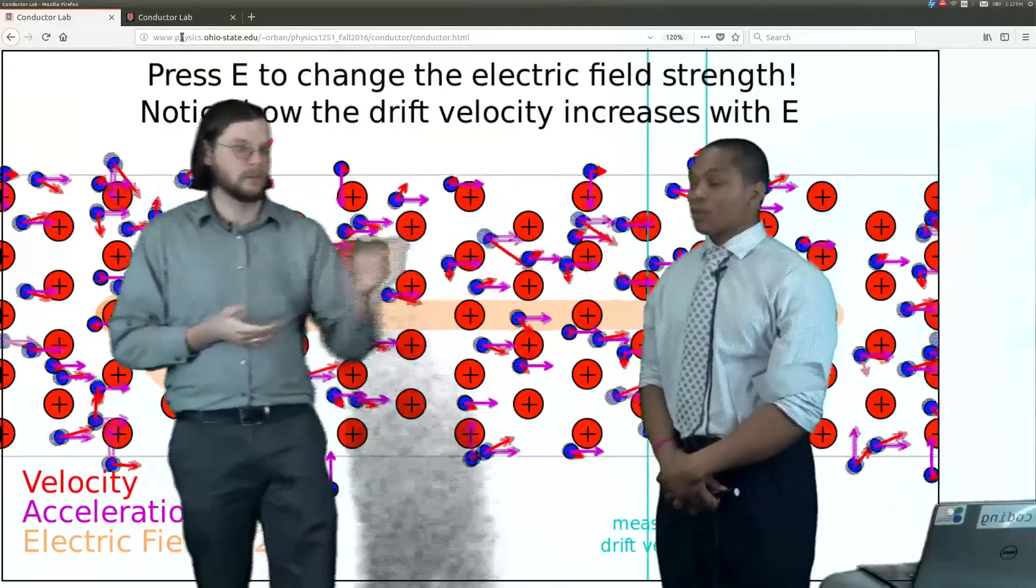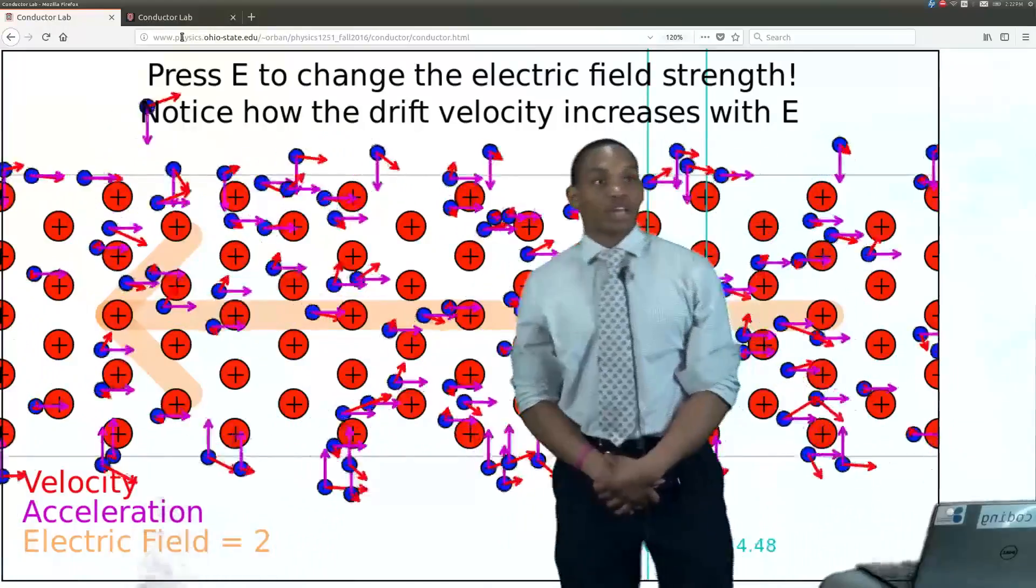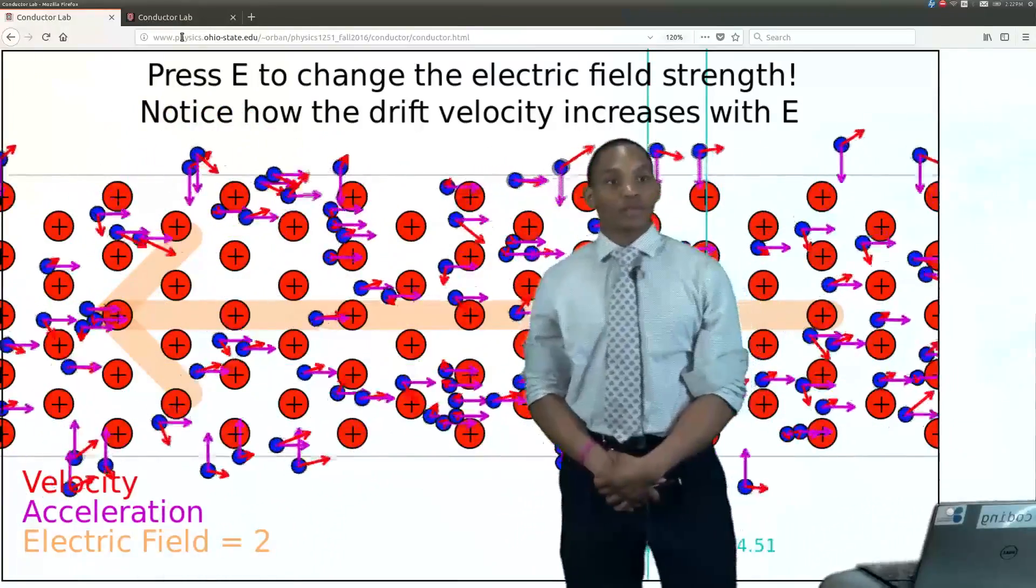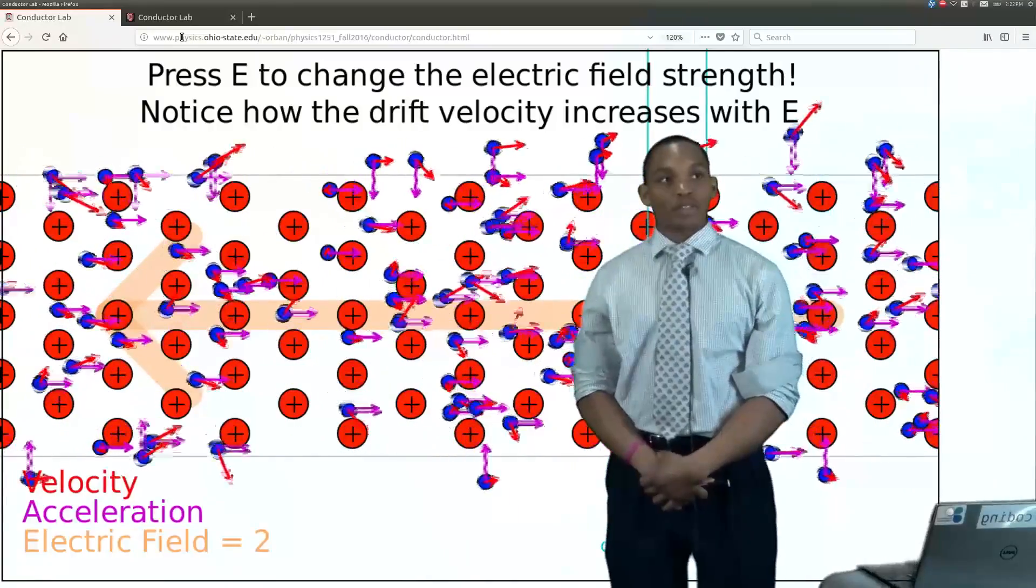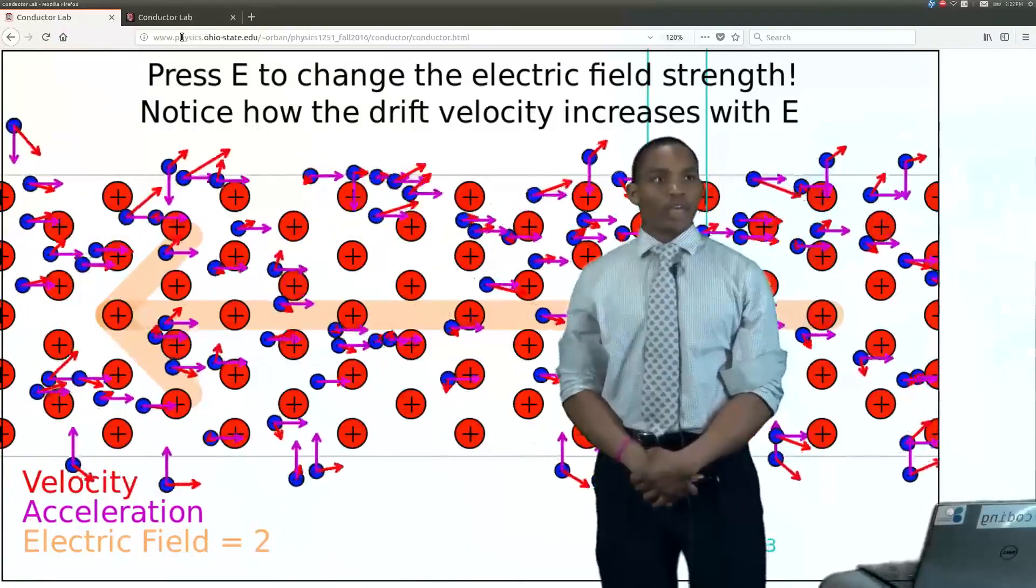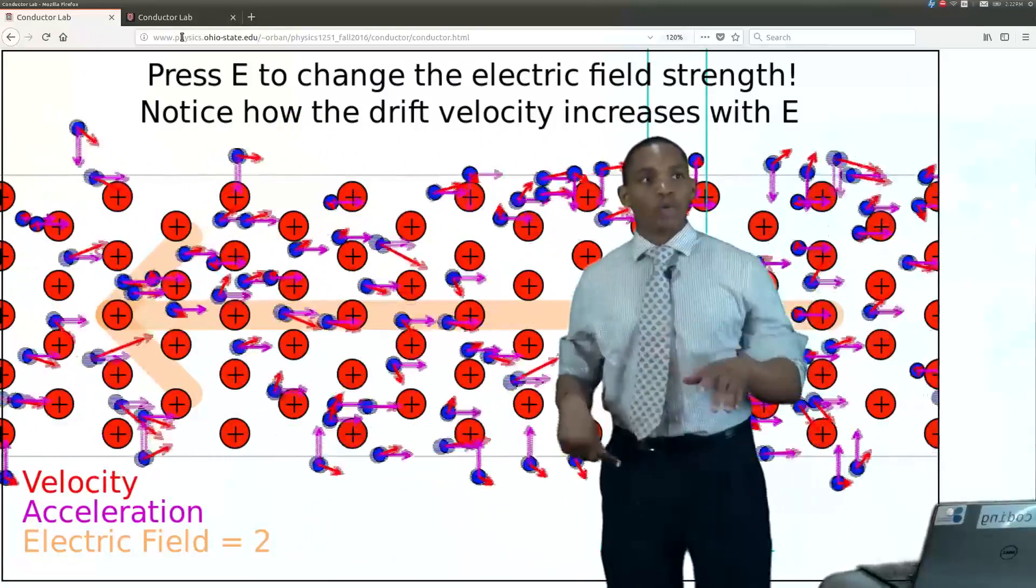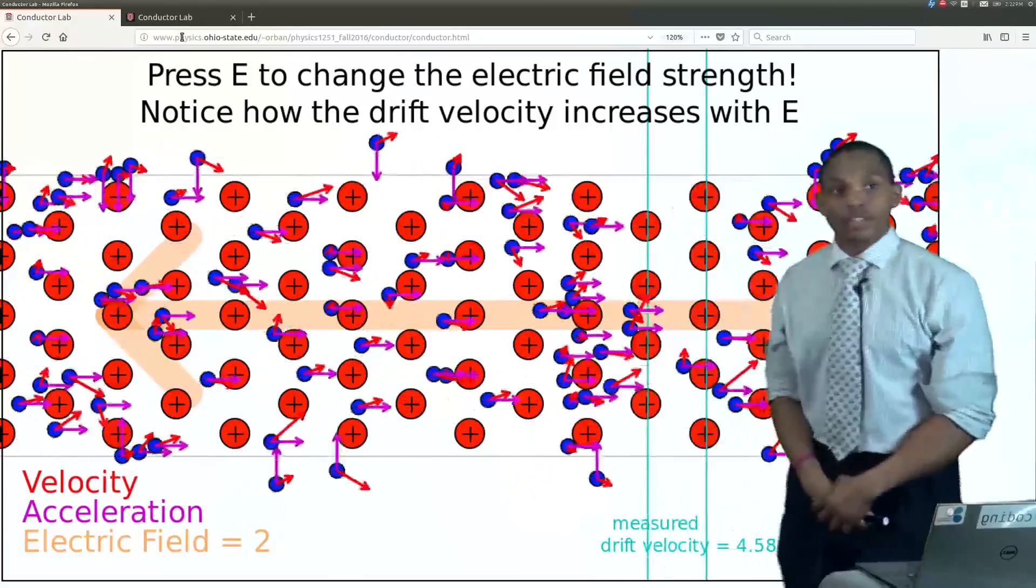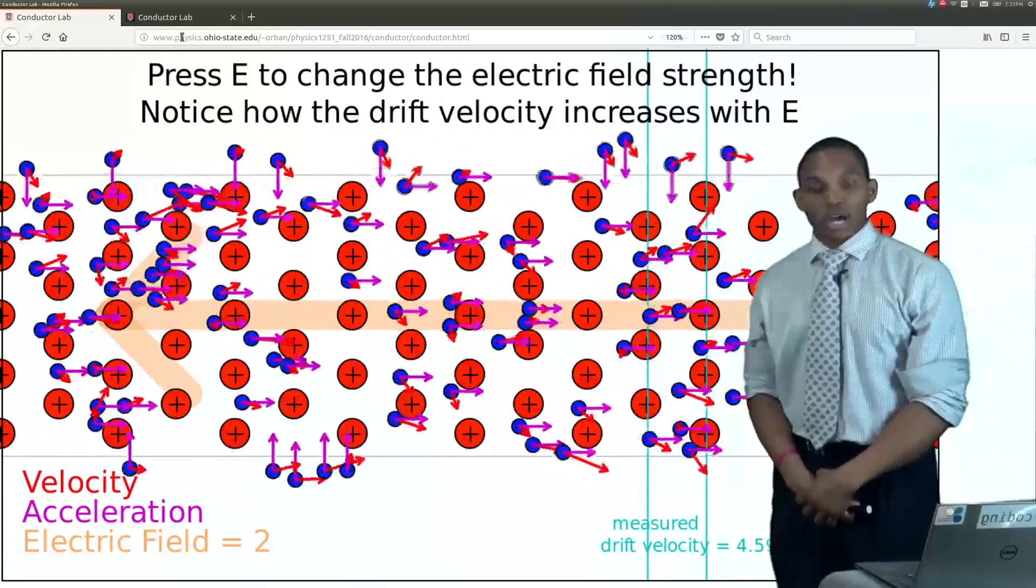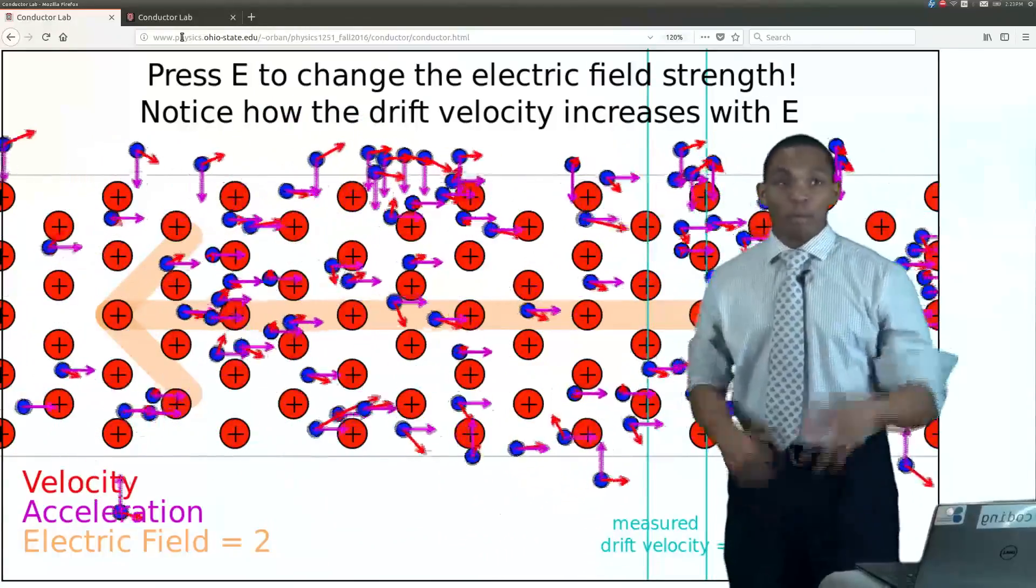We worked really hard to get this thing. Here it is. So the little blue things are electrons and they're negatively charged. The positive things are ions. And what else do you notice about this thing? Well, the first thing I've noticed is that the electrons have an acceleration vector, which is the purple arrow, and a velocity vector, which is the red arrow.